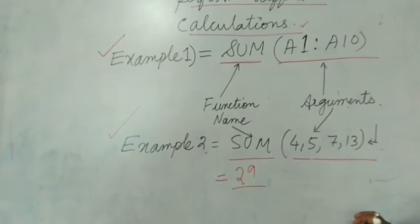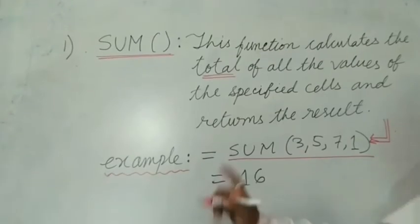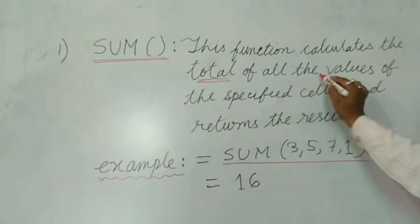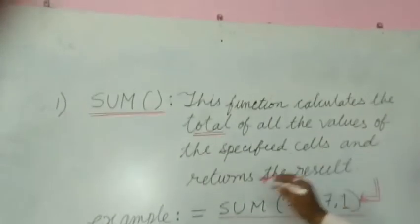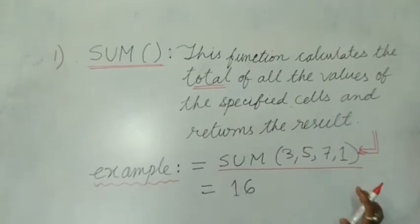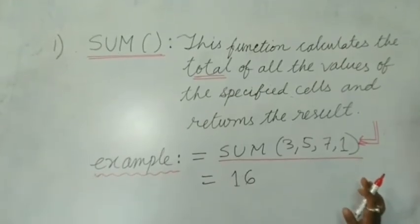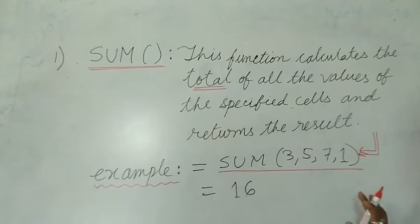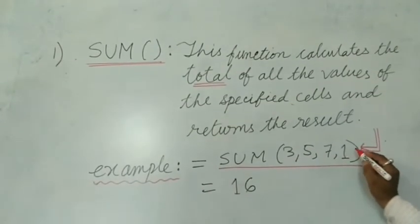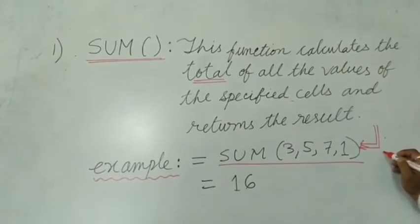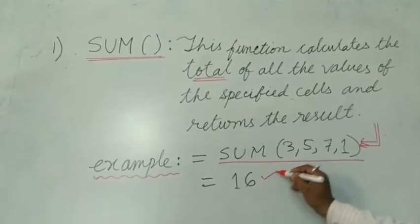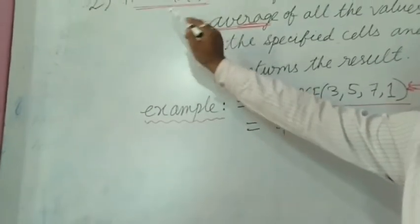Now we'll see more examples of formulas from your book. First is the SUM function — this function calculates the total of all the values of the specified cells and returns the result. It finds the sum of individual numbers, a row, or a column. You specify the range — initial cell address to last cell address. Example: =SUM(3,5,7,1) gives the answer 16.